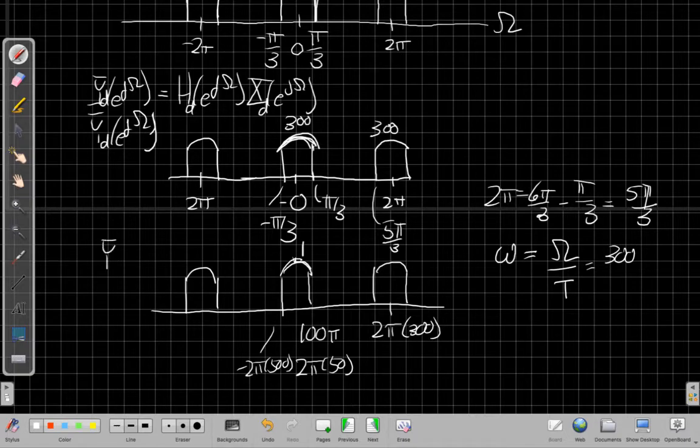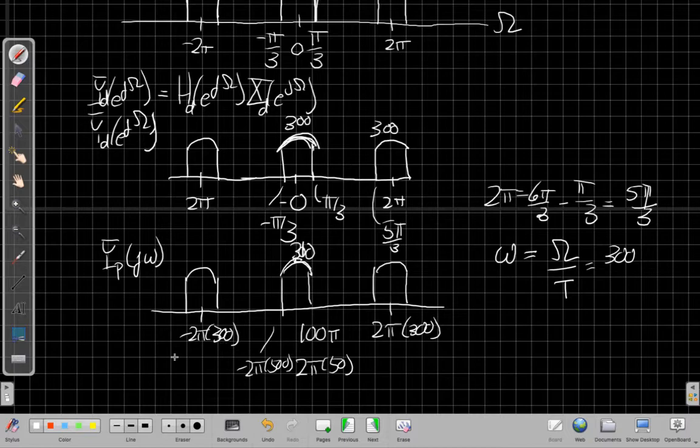Similarly, so this would be my Yp. Oh, I'm lying, this is still a height of 300. This is Yp of jω. This is the Fourier transform of the pulse train.